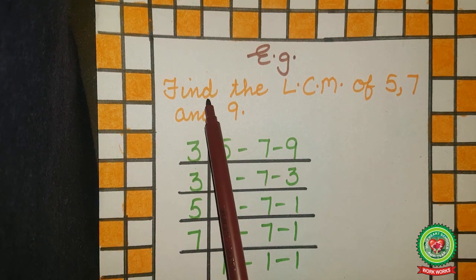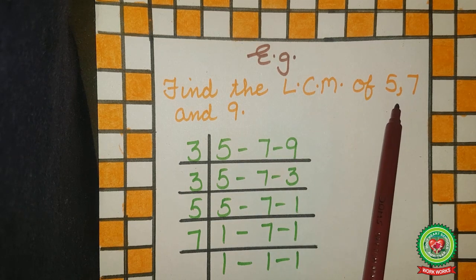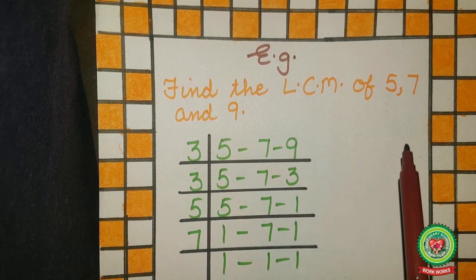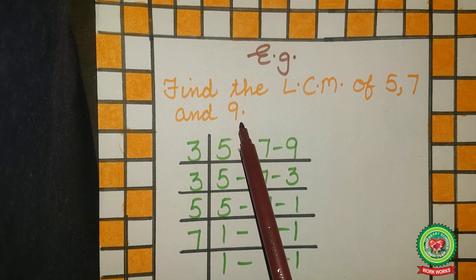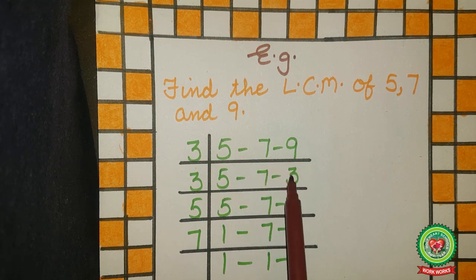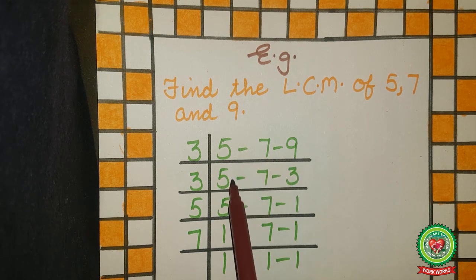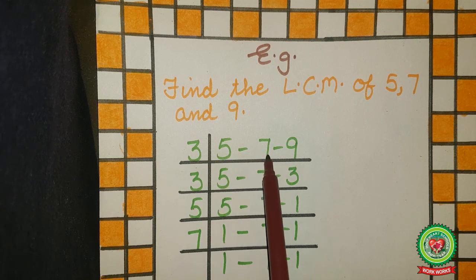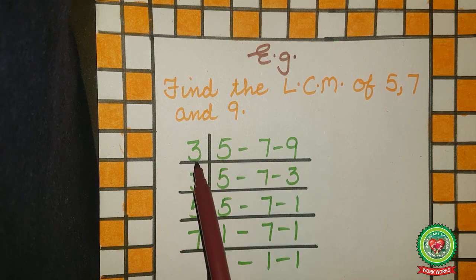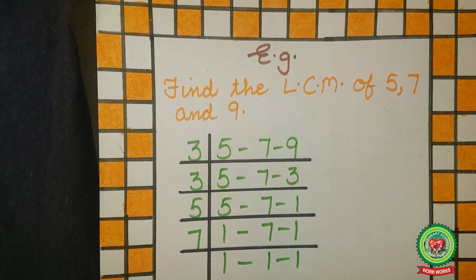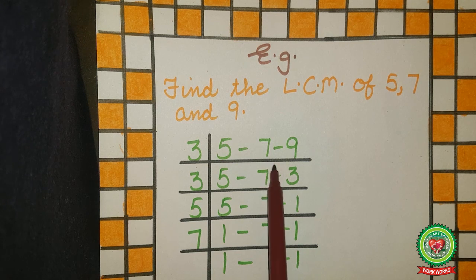Example number two: find the LCM of 5, 7, and 9. Firstly arrange these numbers in a row. Divide by the smallest prime number which divides at least one of the numbers. Since 5, 7, and 9 are all odd numbers, they are not divisible by 2, so we will not take 2 as a divisor. The next prime number is 3. Five is not divisible by 3, seven is not divisible by 3, but 9 is divisible by 3, so we take 3 as the divisor.